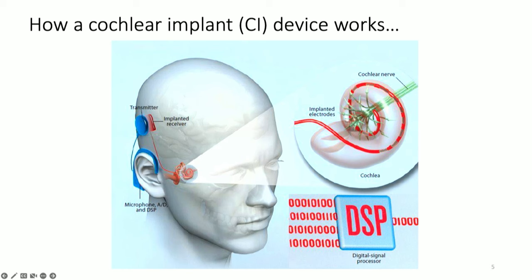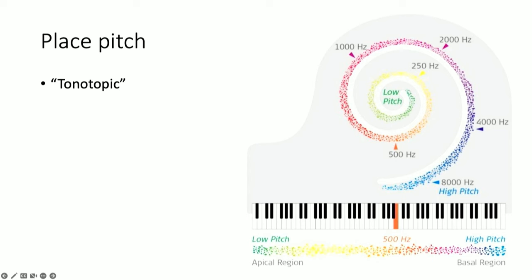Cochlear implants make use of an elegant aspect of the auditory system's architecture where pitch is encoded in duplex — both in terms of the place of stimulation along the cochlea, and in terms of the rate of firing of auditory neurons. The cochlea is arranged like a piano, where frequencies of auditory neurons are arranged spatially. If a given electrode is stimulated near the base, it elicits a high-frequency pitch percept, which progressively lowers in pitch as we move towards the apex. This is referred to as tonotopy.